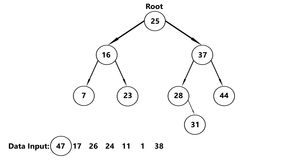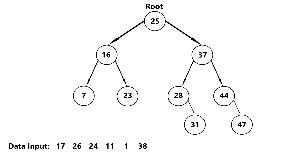47 is greater than 25, so we go right. 47 is greater than 37, so we go right again. And finally, 47 is greater than 44, so it becomes the right child of 44. Moving on, 17 is less than 25, so we go left. 17 is greater than 16, so we go right. 17 is less than 23, so we can insert left.